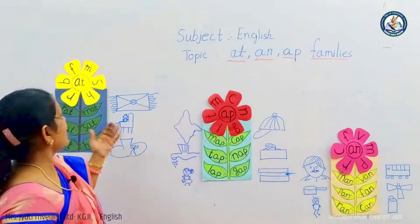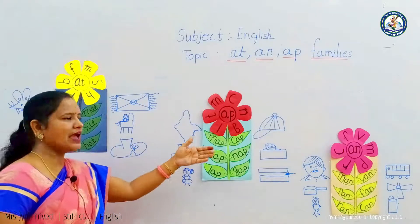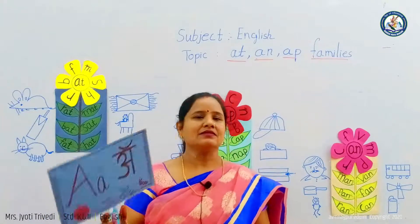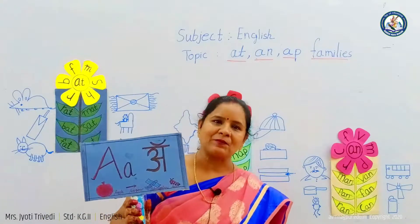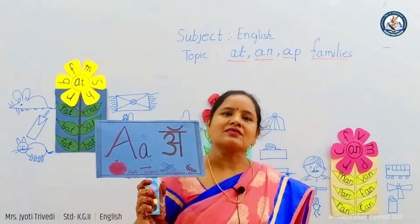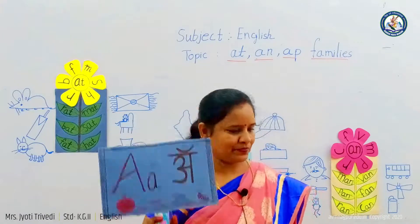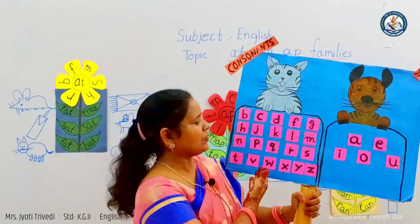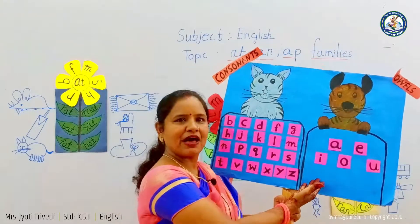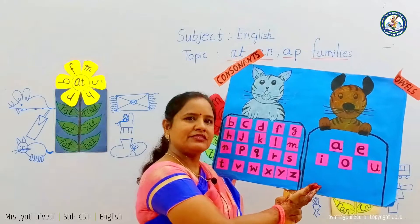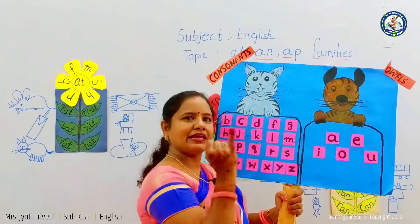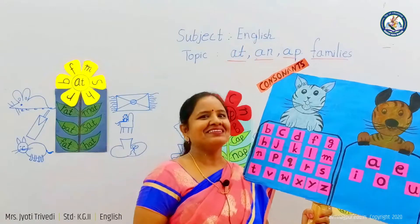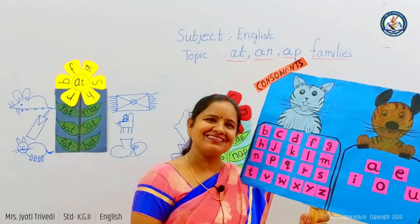Okay, is that clear? Now let's revise. The sound of A is 'a'. What is the sound of A? The sound of A is 'a'. How many vowels and consonants are there? There are twenty-one consonants and five vowels. Which are they? They are A, E, I, O, U. Is that clear? Thank you. Have a nice day.